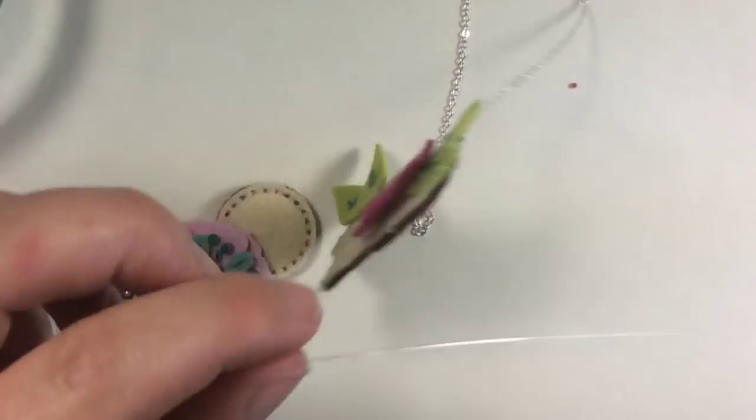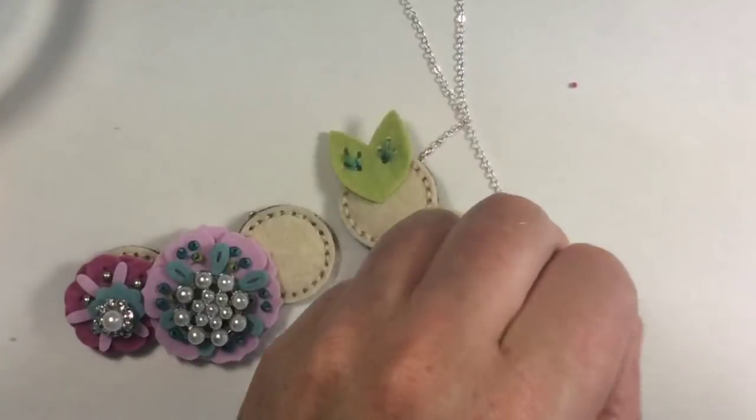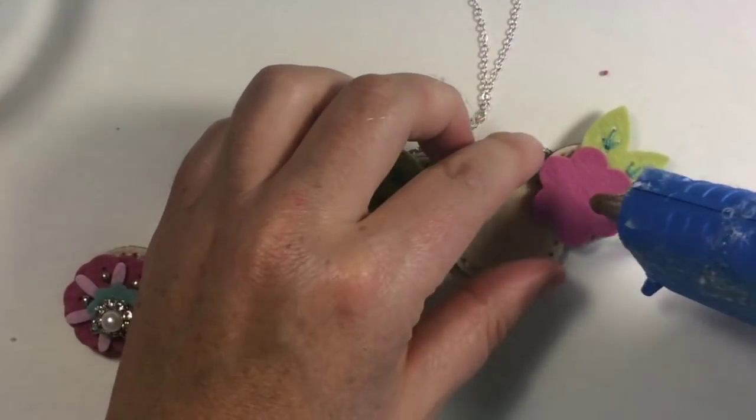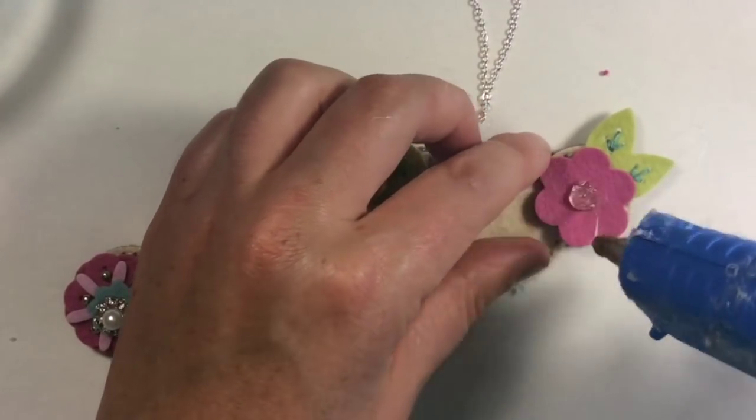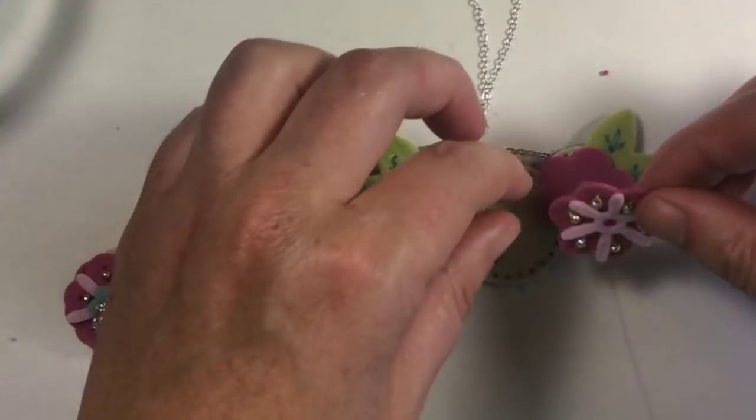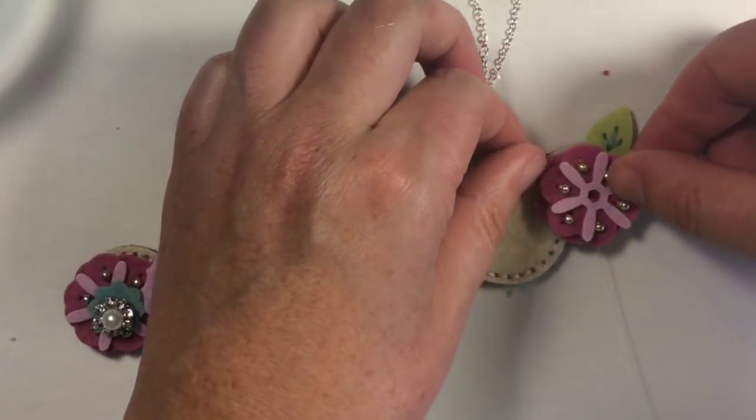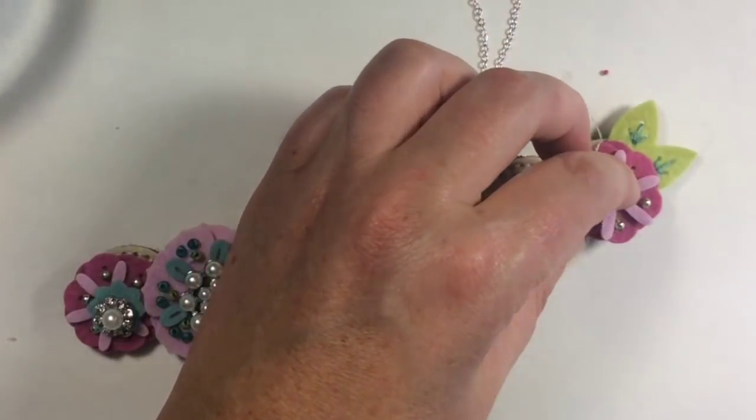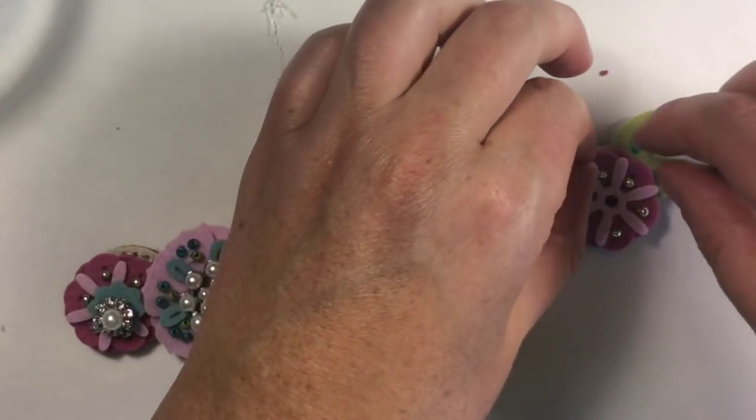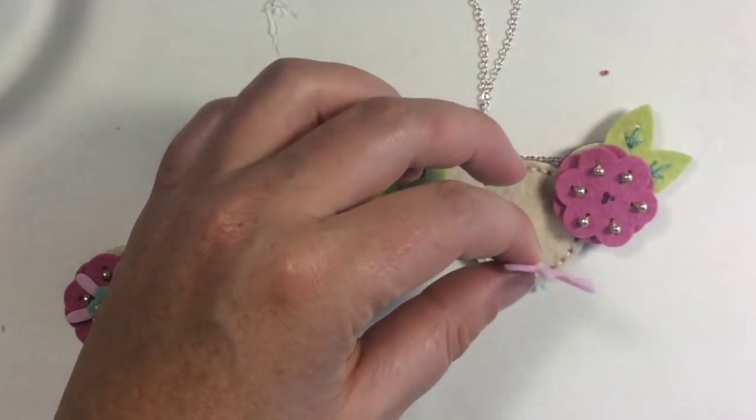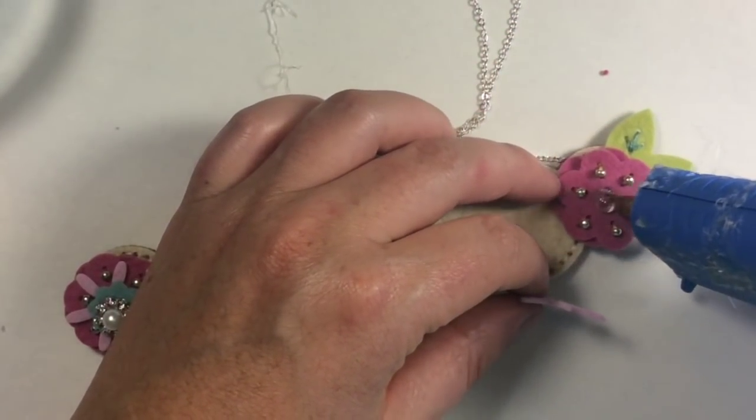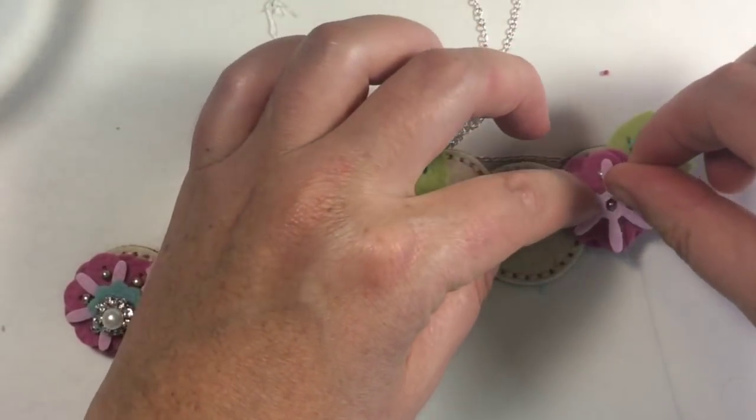Hot glue with all those strings kind of gets in the way but once they harden up a little bit you can pull them away. Now here's a tip with hot glue: if for some reason you don't like the placement of something just wait for things to cool, or you don't have to wait for things to cool, but get your heat gun and just hit it with your heat gun and it softens that glue and you can pull it apart and rearrange.